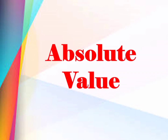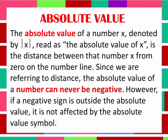What is Absolute Value? The Absolute Value of a number x, denoted by this symbol, read as the Absolute Value of x, is the distance between that number x from 0 on the number line. Since we are referring to distance, the Absolute Value of a number can never be negative. However, if a negative sign is outside the Absolute Value, it is not affected by the Absolute Value symbol.